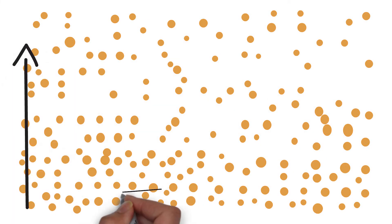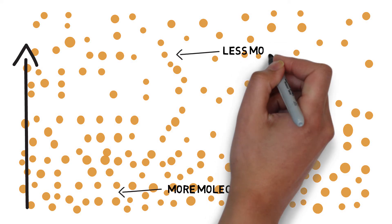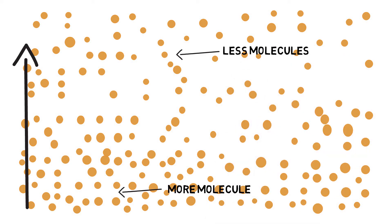And the same thing happens in this case. As we go up high, the number of molecules decreases and the air expands, creating less pressure on it. And we know that temperature is the average kinetic energy of the system.